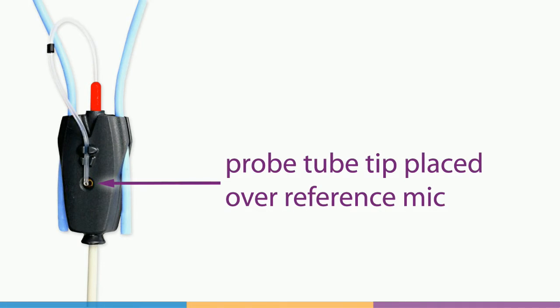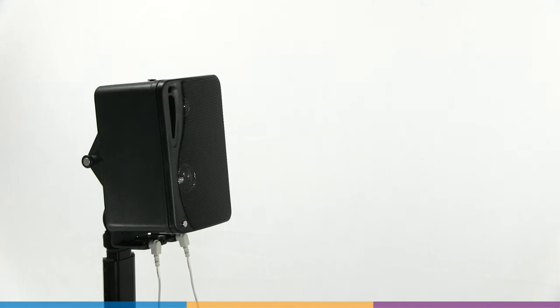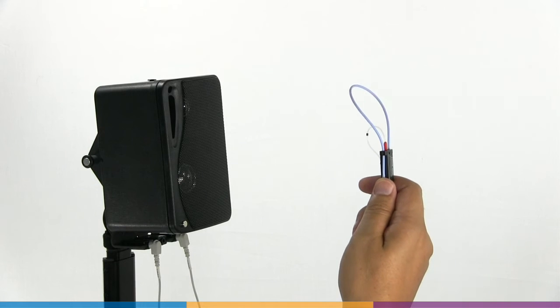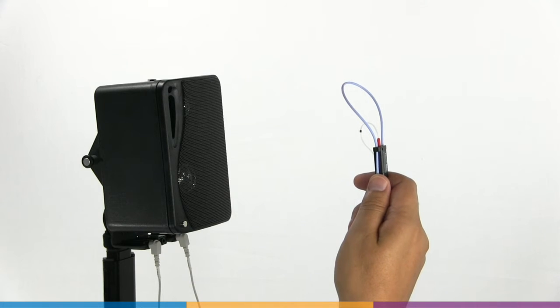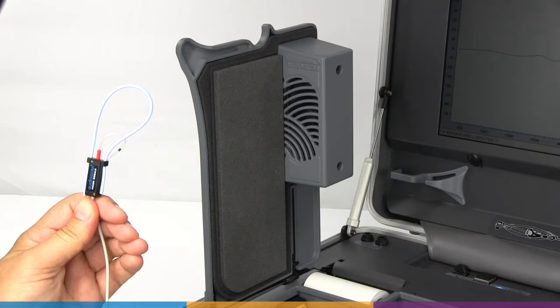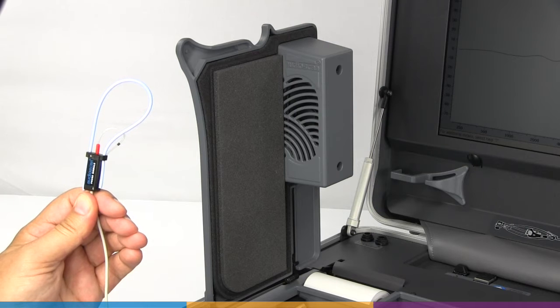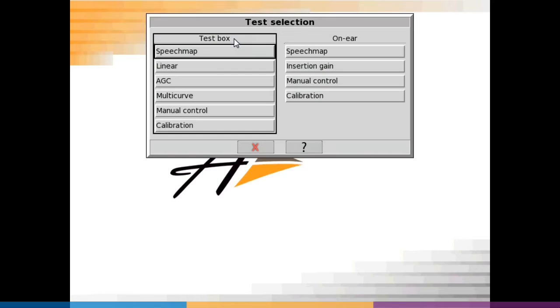Hold the probe module up with the reference mic facing the REM speaker. Distance is not critical, but we recommend 15 to 90 centimeters or 6 to 36 inches from the speaker. From the tests menu, choose on-ear calibration.